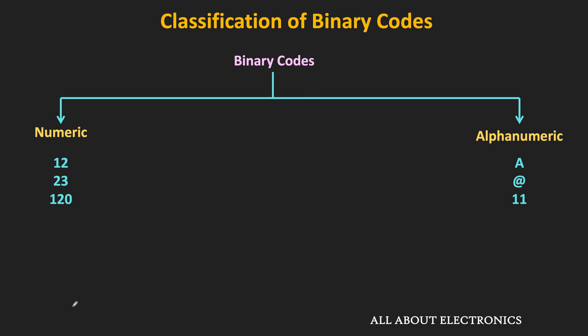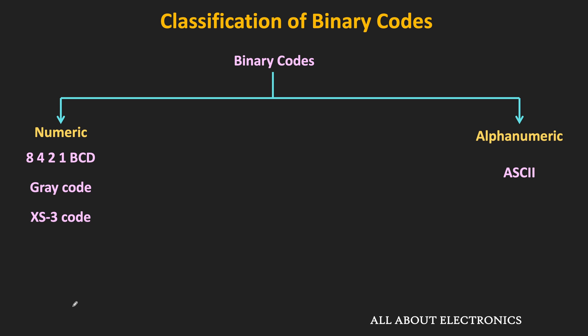ASCII is one of the popular alphanumeric codes and it is primarily used for transmitting data between computers and I/O devices such as printers and keyboards. If we talk about numeric codes, there are various types like BCD 8421 code, gray code, and XS3 code. In the next couple of videos we will learn about all these binary codes in detail.